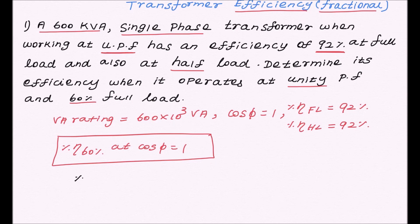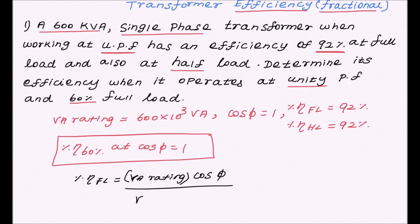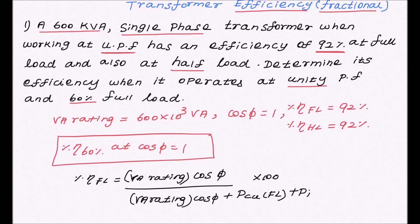The general formula for percentage full load efficiency is: (VA rating × cos φ) divided by (VA rating × cos φ + full load copper loss + iron loss), all multiplied by 100. This is the general formula to calculate the efficiency of the transformer at full load. The data given is that full load efficiency is 92%.